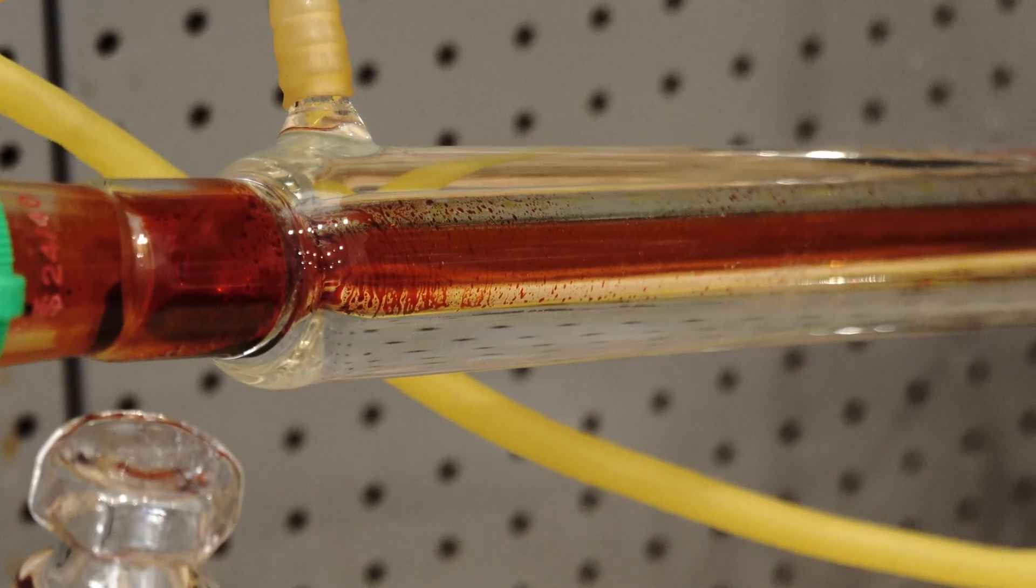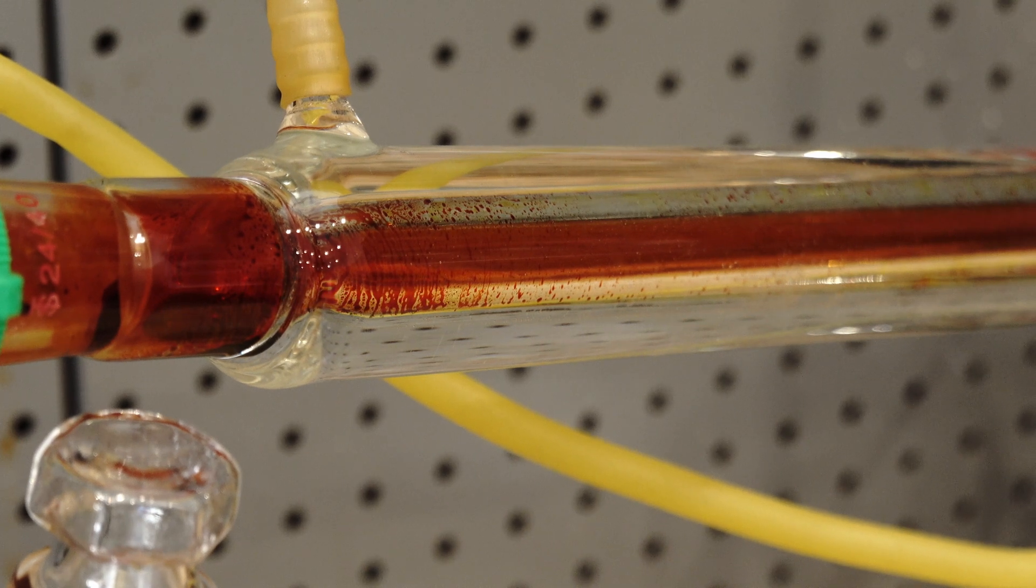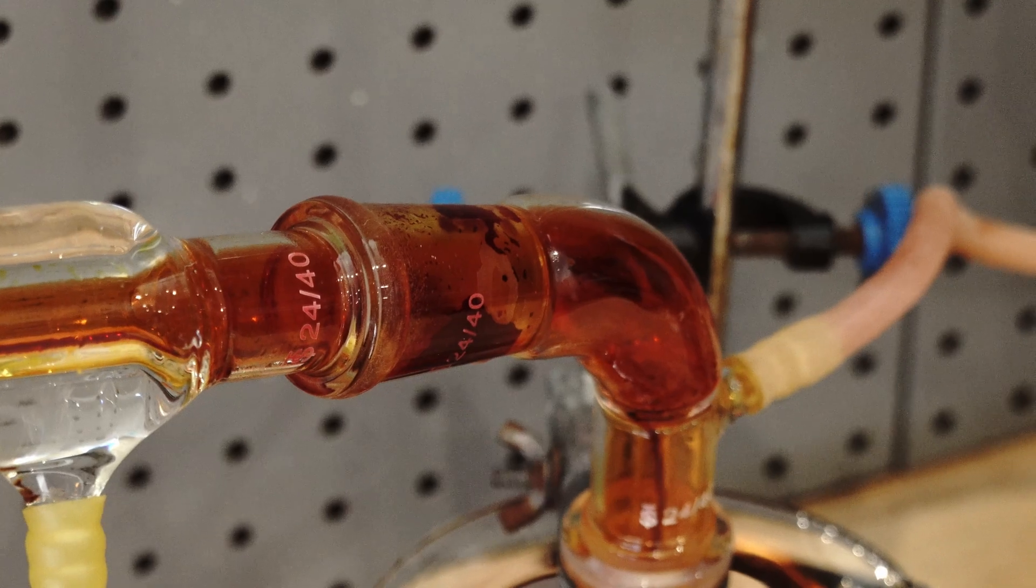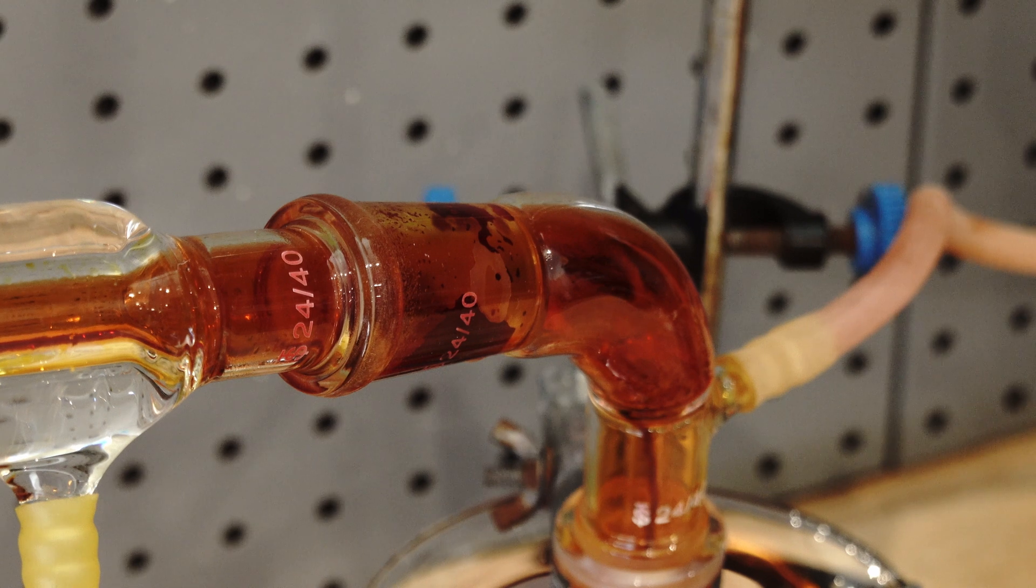And here's a shot of the condensing tube, recondensing the Bromine vapours. Eventually, over time the Bromine started to go into the collection flask, drop by drop.